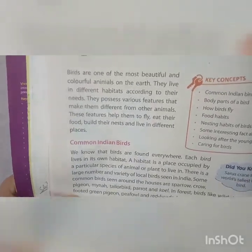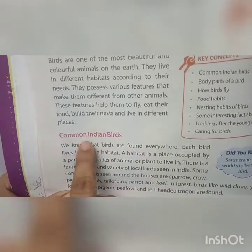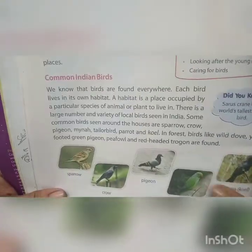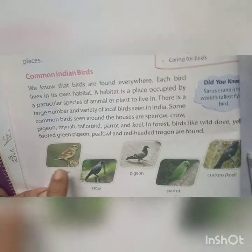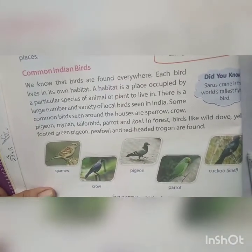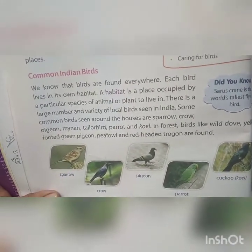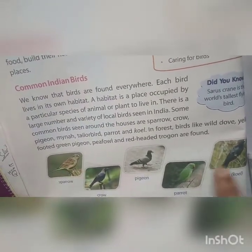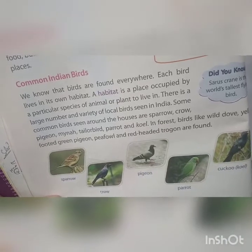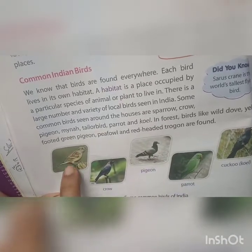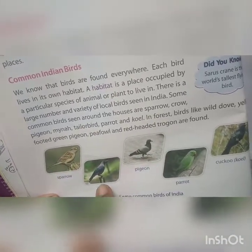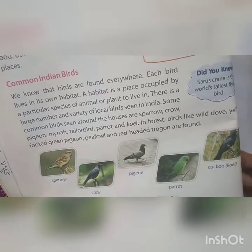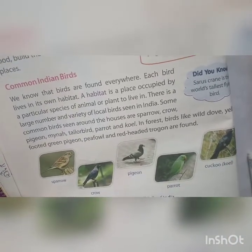So first of all in your book, the common Indian birds are given in the picture. The common Indian birds are the ones we can see every day in our environment. So first is the sparrow, then crow, then pigeon, parrot, cuckoo. So all these birds are familiar to us.